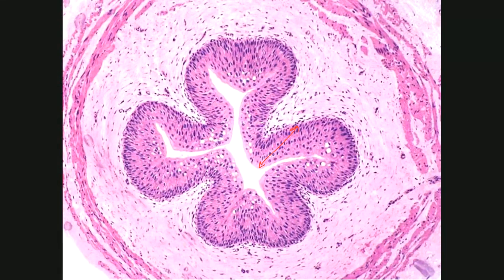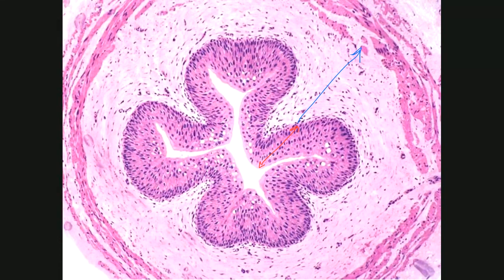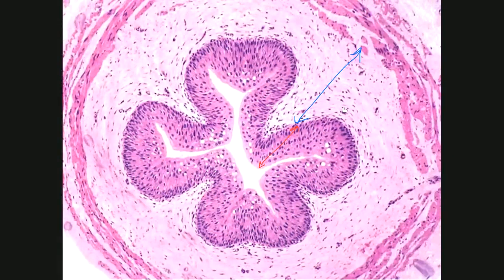After the epithelium, we have the lamina propria submucosa. In this part, we don't have the muscularis mucosa to divide the lamina propria and submucosa, so these two parts are combined together. The lamina propria is loose connective tissue and the tunica submucosa is denser connective tissue — there is no muscularis mucosa here.